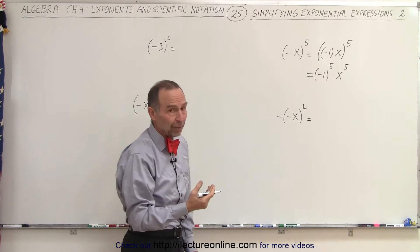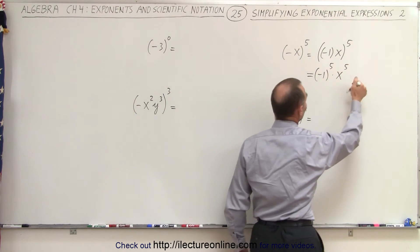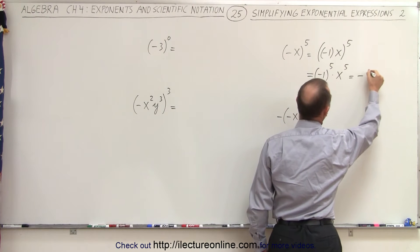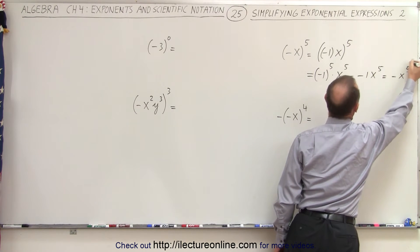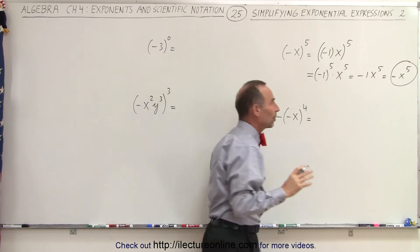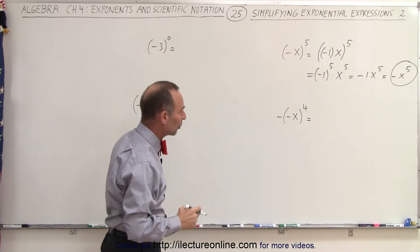And minus 1 to the fifth power, anytime we raise a negative 1 to an odd exponent, we end up with negative 1. So this becomes negative 1 times x to the fifth power or simply negative x to the fifth power. So that's how we deal with negatives and exponents.